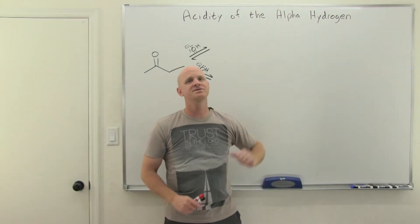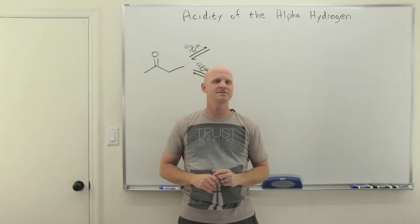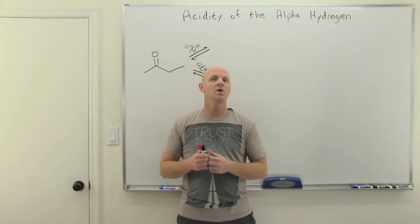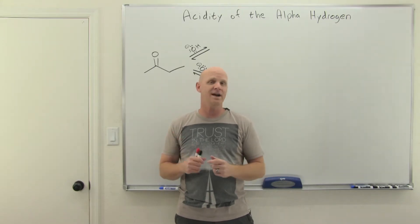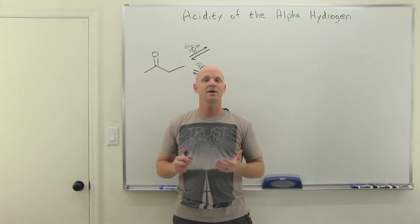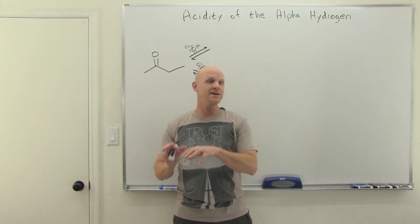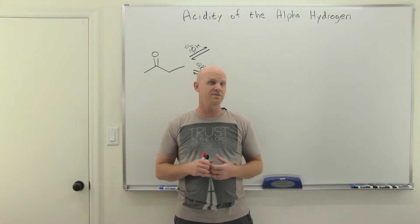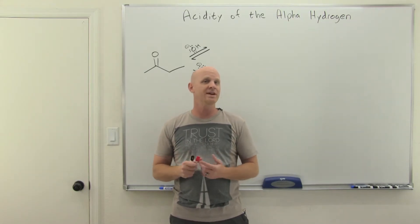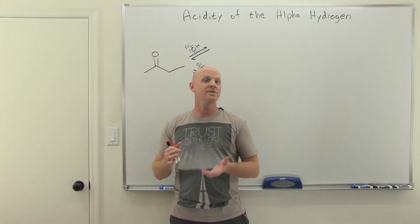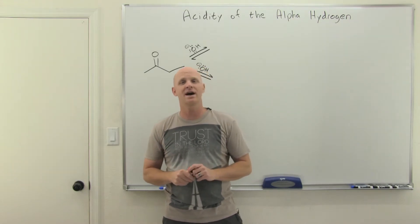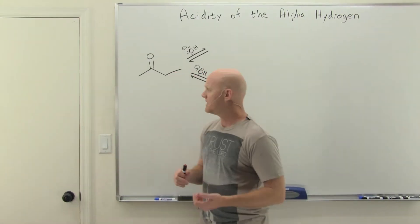Acidity of the alpha hydrogen is going to be the topic in this first lesson on a chapter called substitution reactions at the alpha carbon. A lot of books will call this enols and enolates, and we'll find out that those are the most common nucleophiles we're going to encounter in these substitution reactions at the alpha carbon.